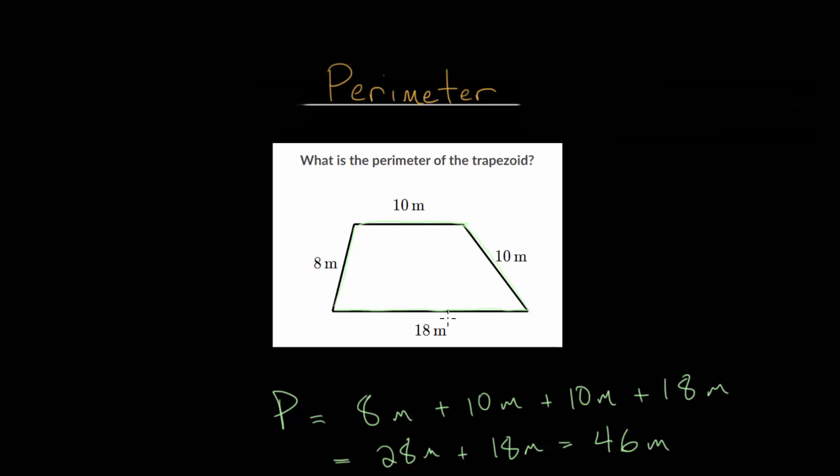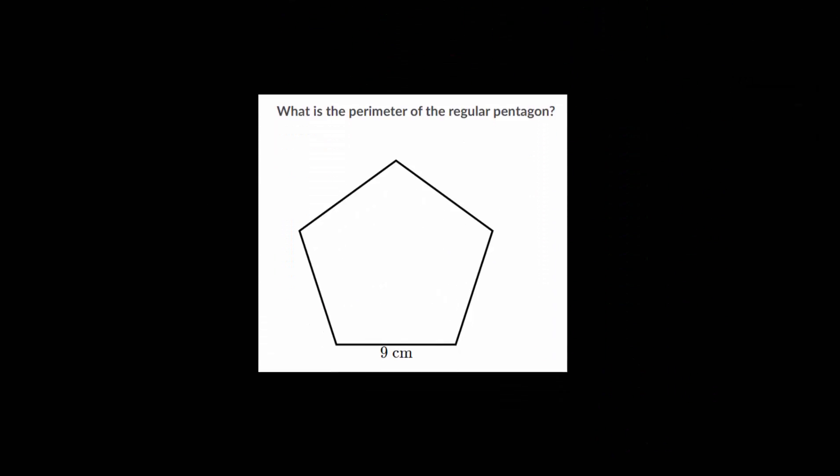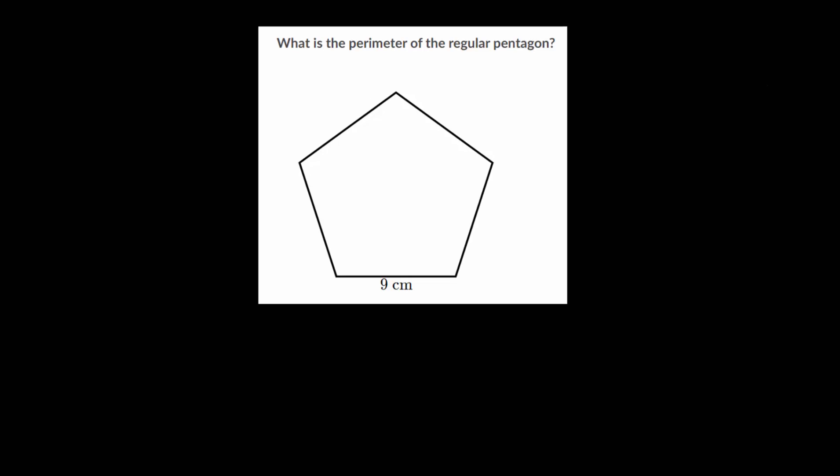So again, if this was our yard, we would need 46 meters of fence to go entirely around the outside. Let's keep going with a couple more examples. What is the perimeter of the regular pentagon?